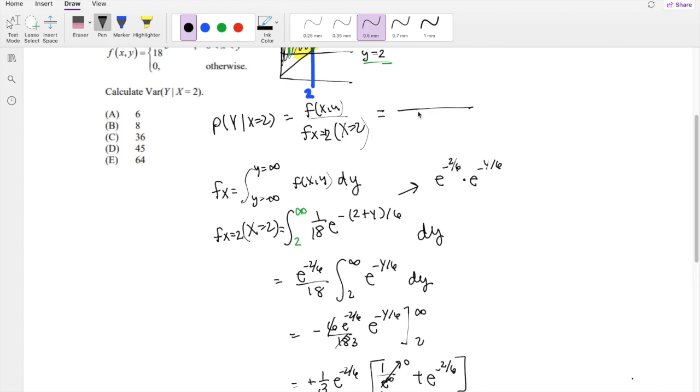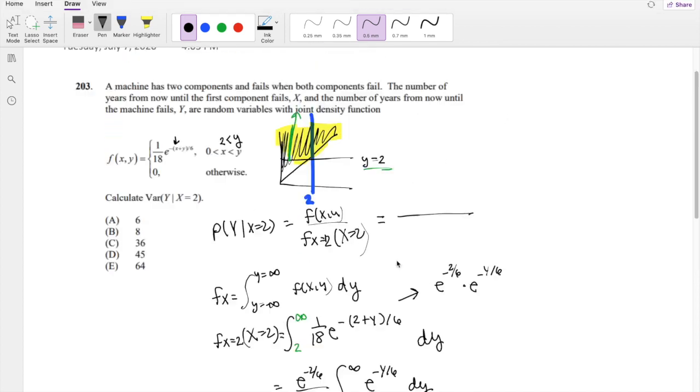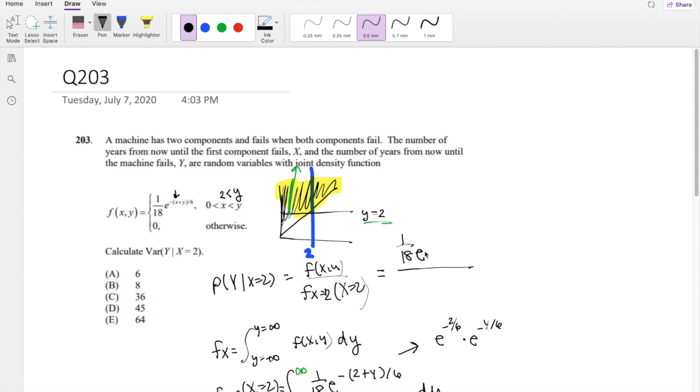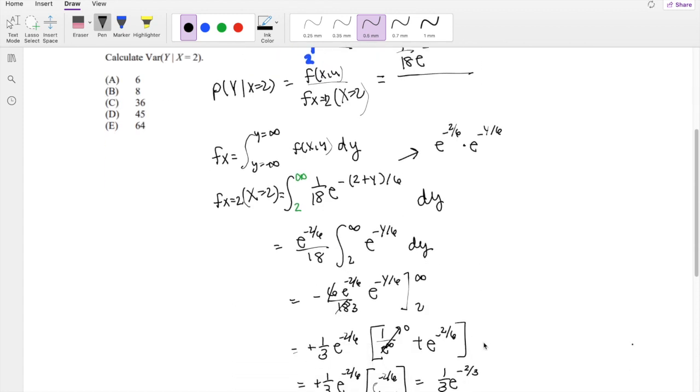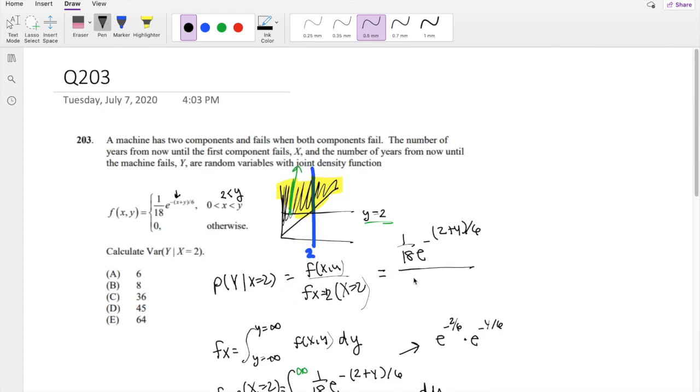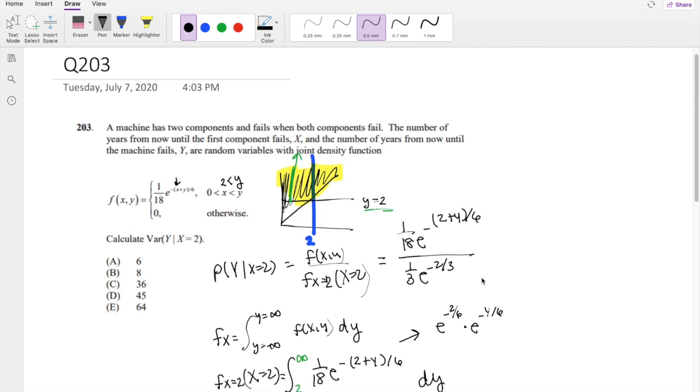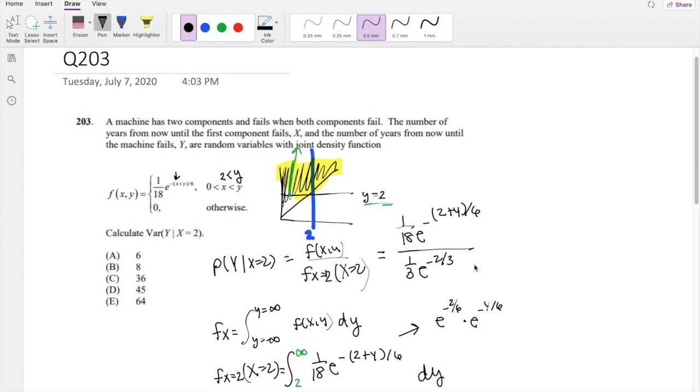F(x,y) just stays the same: 1/18 e^(-(2+y)/6), we can still plug in the 2 for x. The denominator is the thing we just found, 1/3 e^(-2/3). So that's our probability distribution function. Let's simplify it more. The 3 can actually flip up to the top. We can think of the numerator as e^(-2/6) times e^(-y/6). We see that e^(-2/3) is on the bottom too, so divide by e^(-2/3).